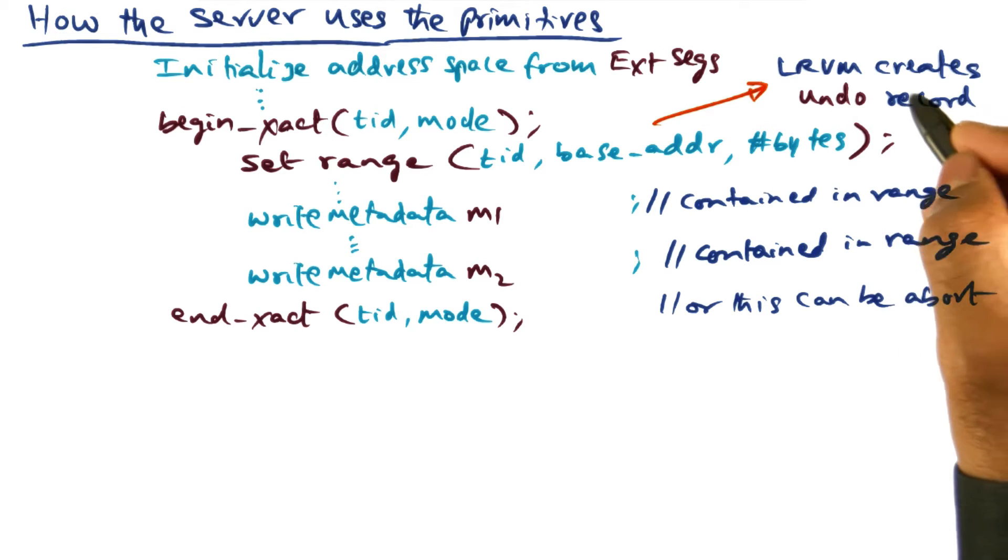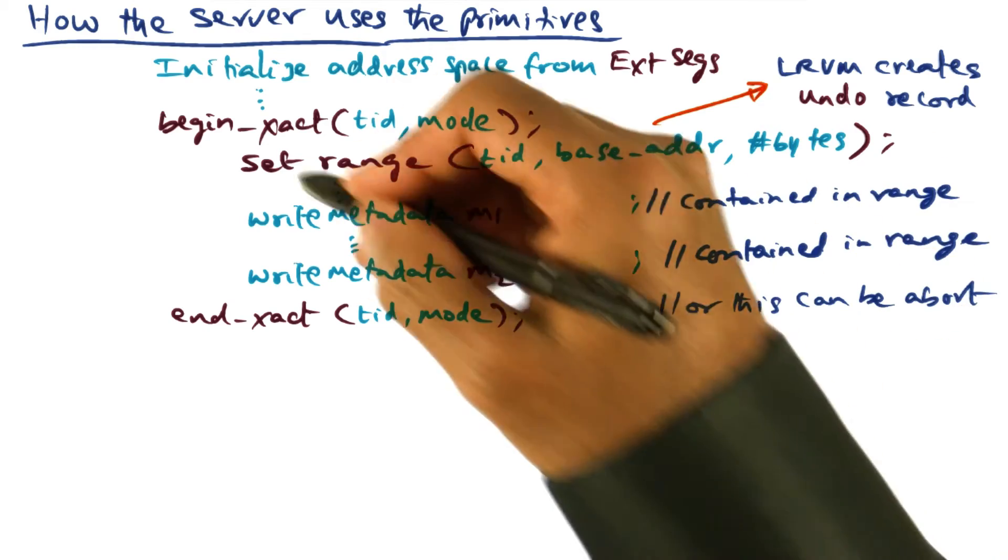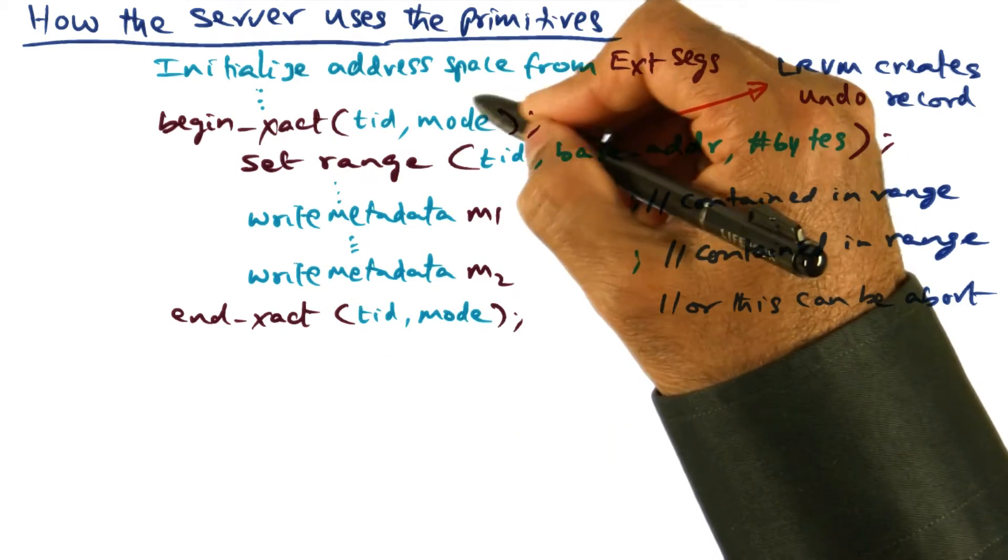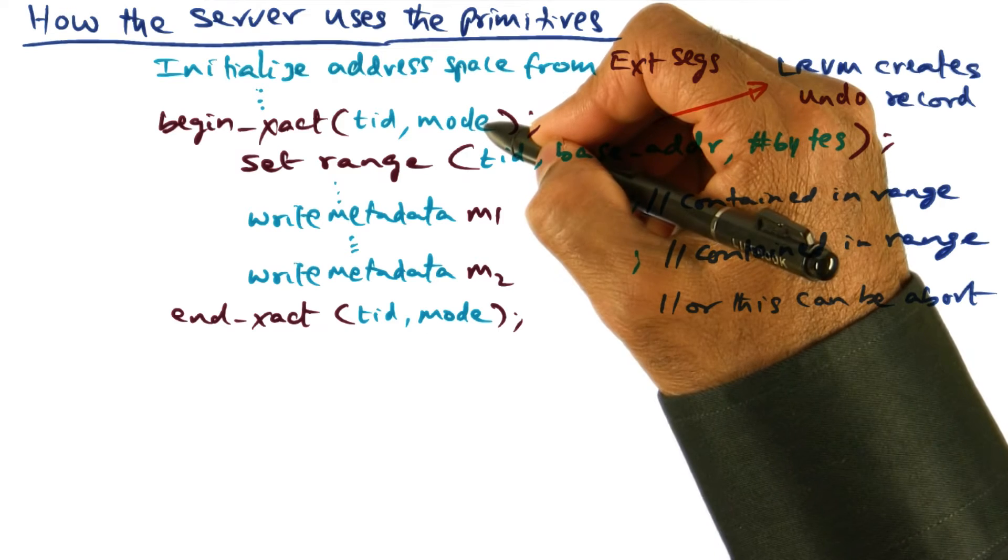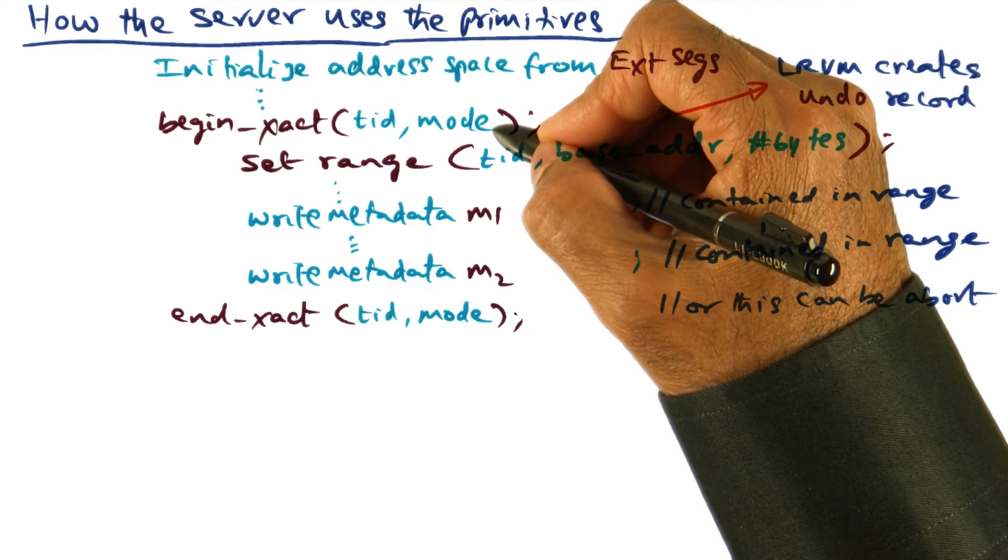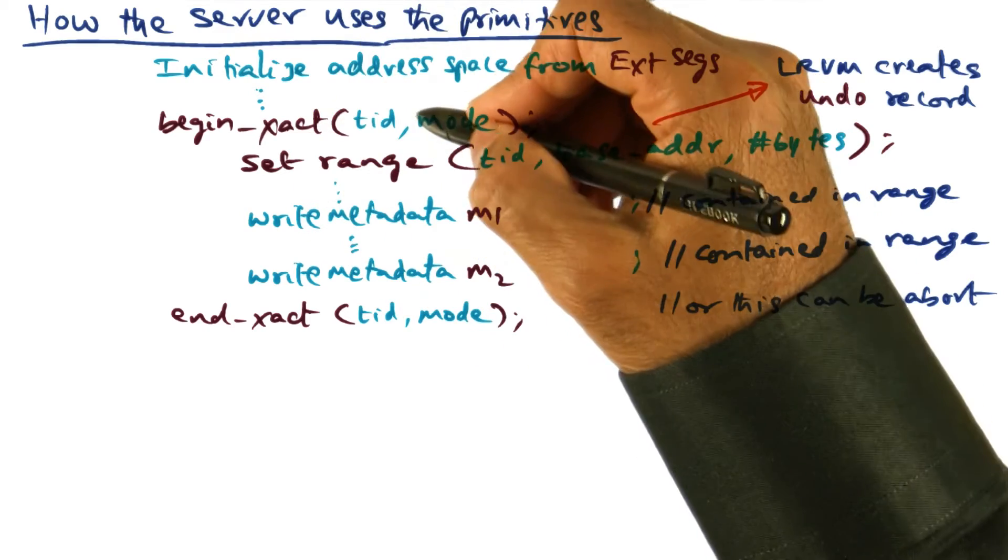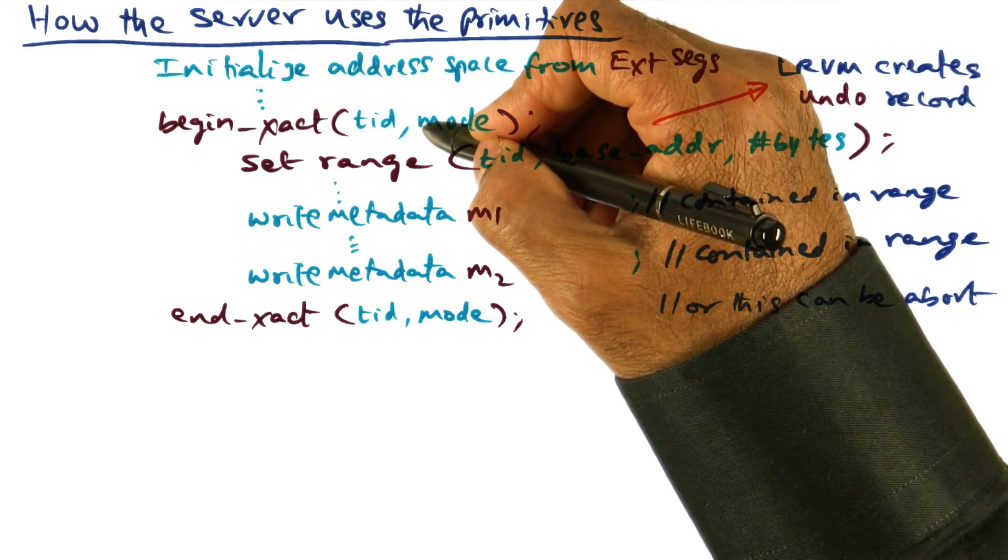And in fact, LRVM would create this undo record only if it is needed by this transaction semantic. In the begin transaction, there is a mode specifier that the user can specify to the RVM whether this particular transaction is going to ever abort.